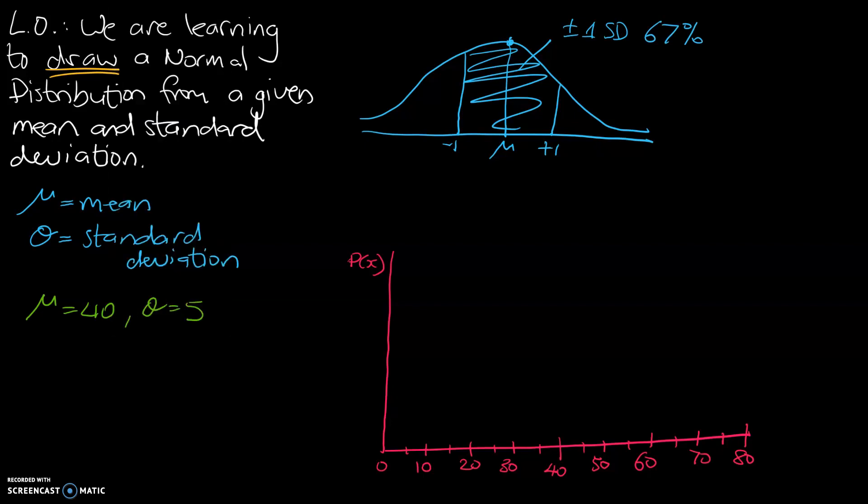The next one I wanted to draw is if you actually extend this to 3, so we've got minus 2, minus 3, and we've got plus 2, plus 3. So if you extend that to within three standard deviations of the mean, so plus or minus 3 standard deviations, that actually relates to 99.7% of your data, which is nearly all of the data.